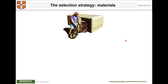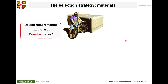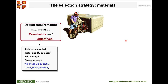Let's go through a selection process with an example: designing a shed to cover a bicycle during winter. First, list your design requirements as constraints and objectives. Constraints use a pass/fail criterion — your design must meet them. Objectives are quantities you want to minimize or maximize.